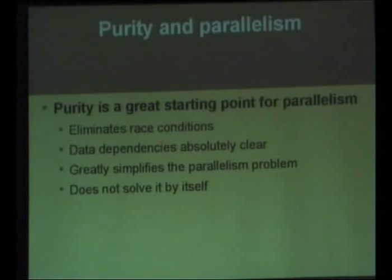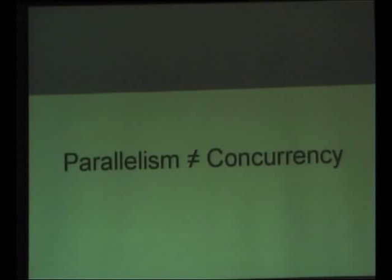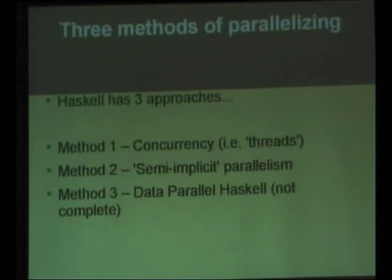Purity is an excellent starting point for parallelism — it makes the whole problem a lot simpler and eliminates a lot of problems, essentially all your race conditions and deadlocks. But it doesn't solve it by itself. Now, functional programmers are keen to note that parallelism is not the same as concurrency. Concurrency is the familiar threading abstraction and can be used as a method to achieve parallelism, but parallelism is just using multiple cores or processes.